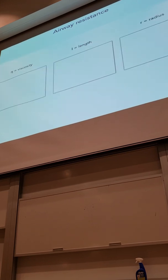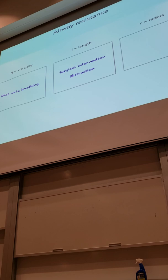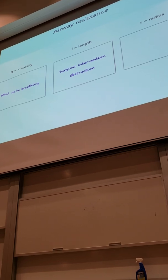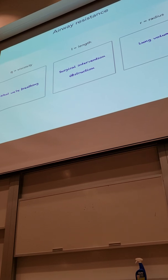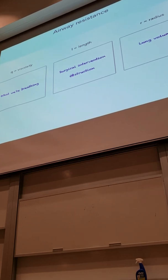So we can summarize that the sources of resistance come from the air itself — viscosity doesn't really change — and length, which we can alter with surgical intervention or obstructions, but most of the time not a big deal. What about radius? By increasing lung volume, as lung volume increases, radius also increases and resistance goes down. There's one other way we can affect radius: bronchodilation and bronchoconstriction.